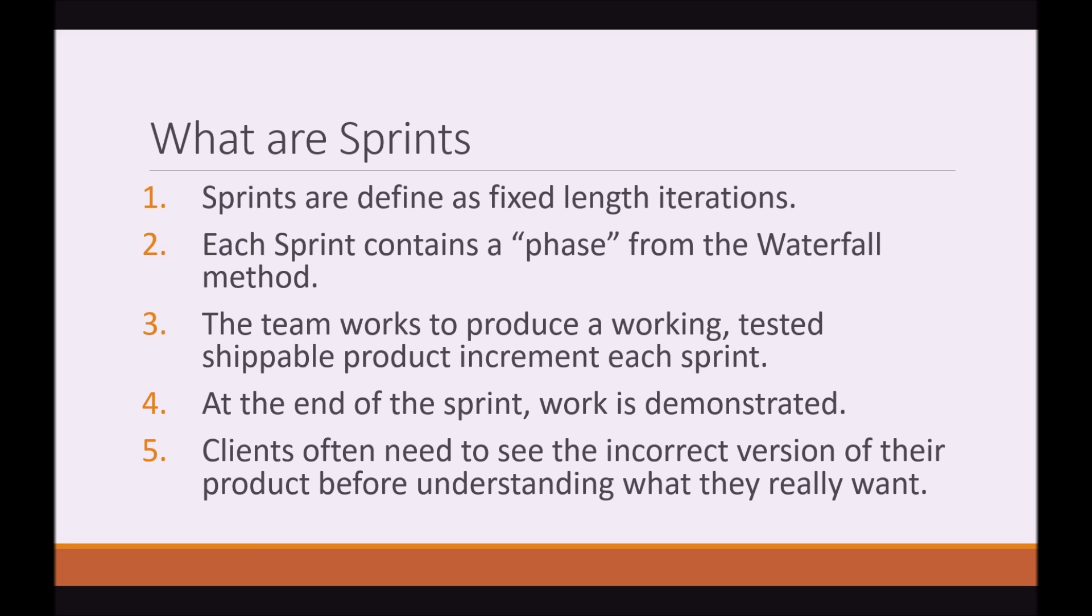All the phases described in the waterfall method are mixed into something called a sprint. So what are sprints? Sprints are defined as fixed length iterations. Each sprint contains a phase from the waterfall method. The team works to produce a working, tested, shippable product increment each sprint. At the end of the sprint, work is demonstrated. Clients often need to see the incorrect version of their product before understanding what they actually want.